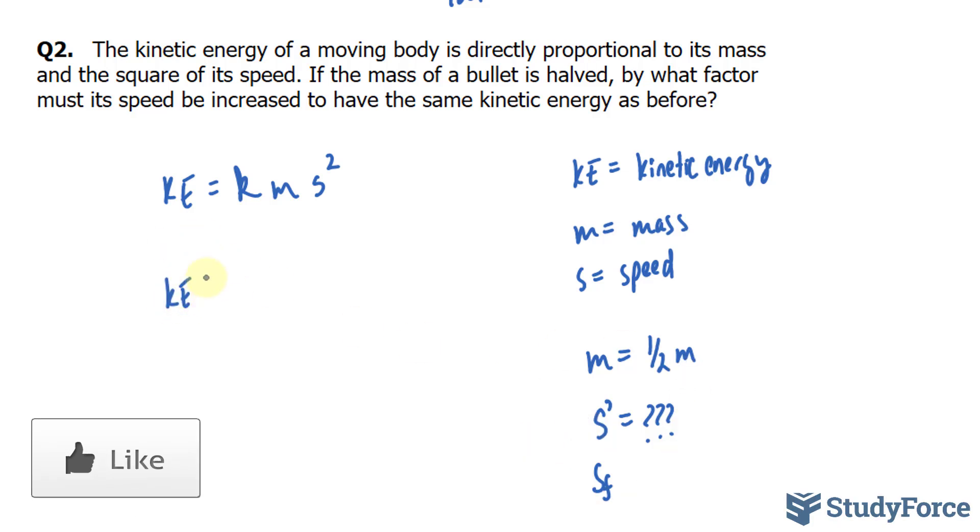So let's represent another equation for the after conditions. We have kinetic energy, which has remained the same, K, which we don't know, M has become 0.5 of the original. Remember, 0.5 and half is the same thing. So this expression and this expression mean the same thing. And our S is what we're looking for. S prime squared is what we're looking for.